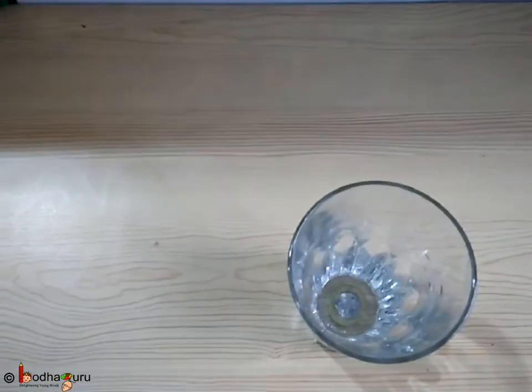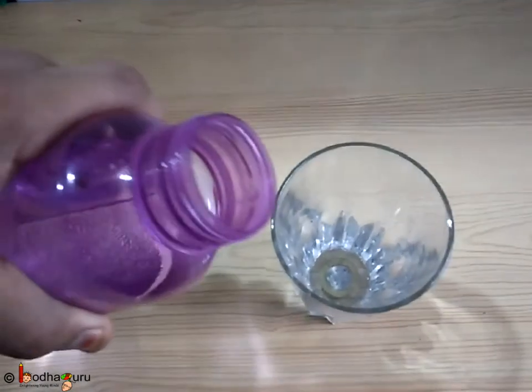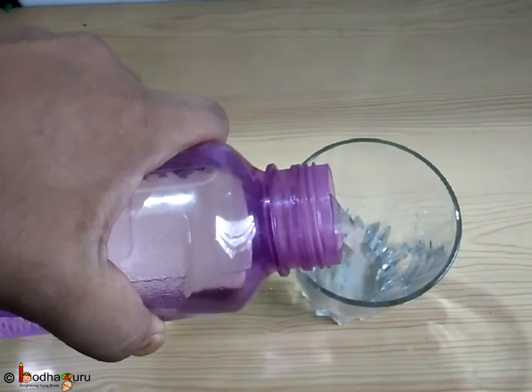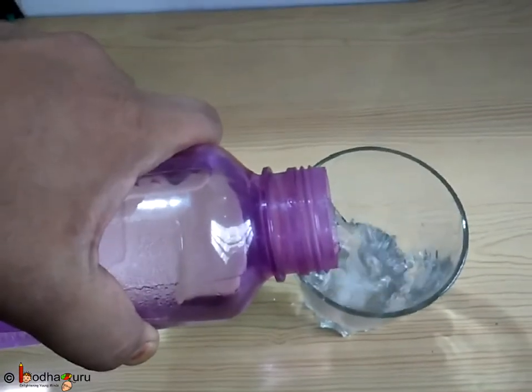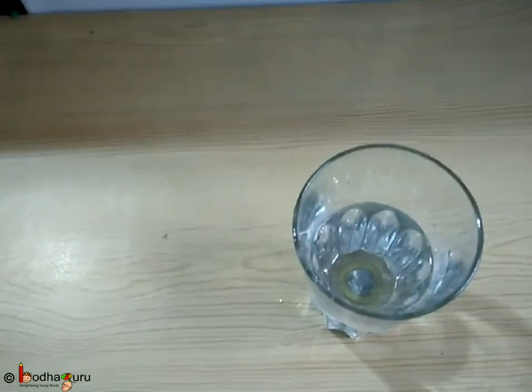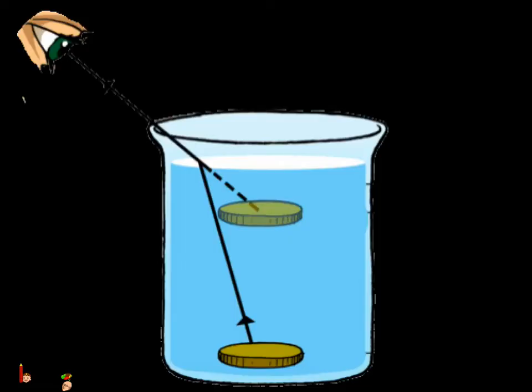Sometimes it seems like light is playing tricks with us. If you put a coin in a glass and pour water on it, the coin would appear to be shallower. That is, it would appear a little higher than the bottom of the glass, right?